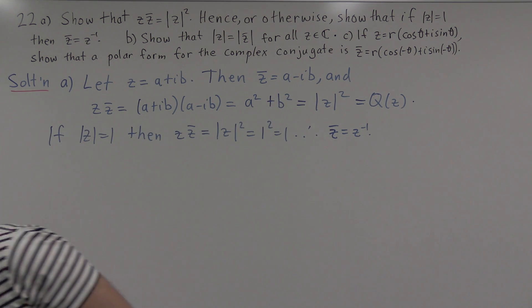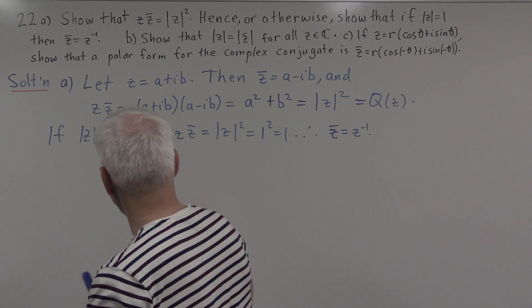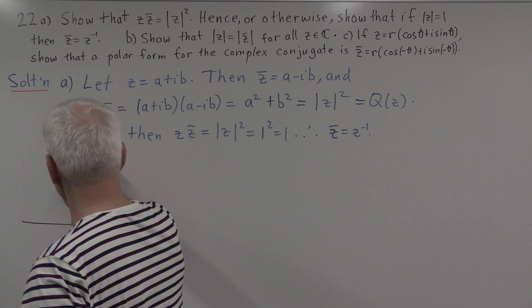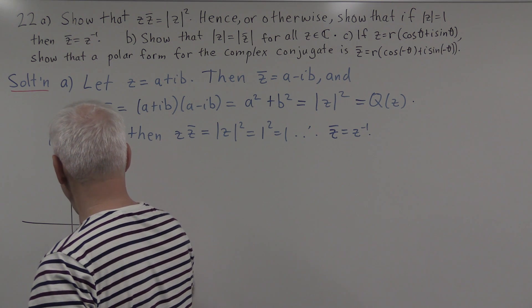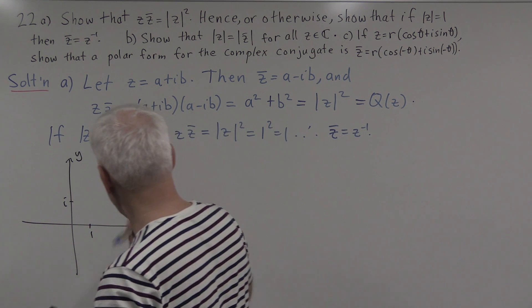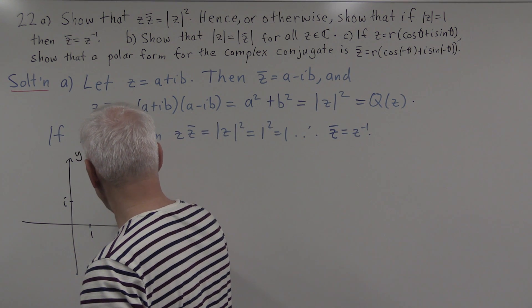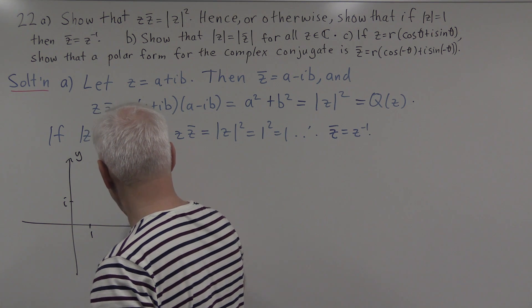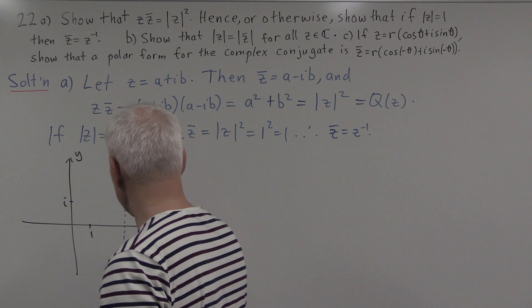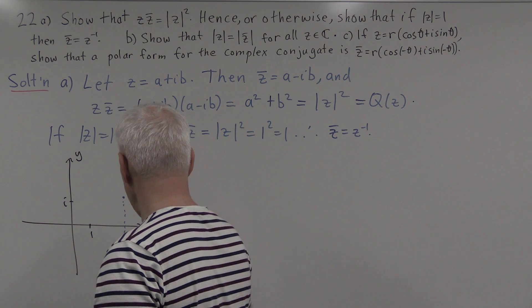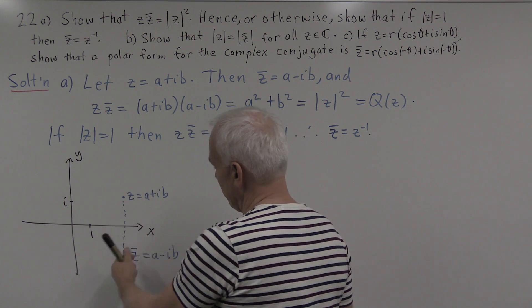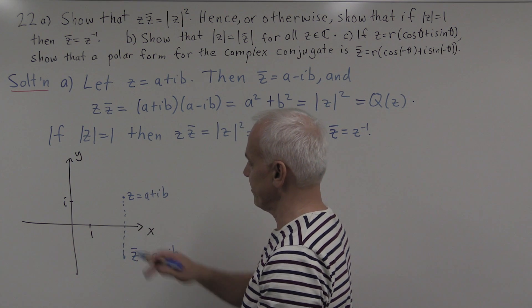And let me draw a little picture for that. So here is our complex plane, x-y axis, maybe a 1 and an i there. So we have a general complex number z = a + ib. Then its reflection in the x-axis is the complex conjugate, that's a - ib. So the real part, which is a, stays the same, and the y coordinate becomes negative.